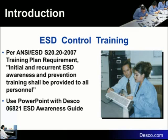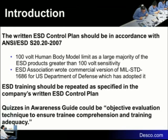S-2020 is the standard that we tend to follow. It gives a lot of flexibility — it doesn't tell you exactly what to do, but gives the company some broad guidelines. One of those broad guidelines is that you must have a training plan. There's also a required written ESD control plan. The 2020 program is written around a 100-volt sensitive device, which will become more meaningful shortly. Training is a required element of the document.